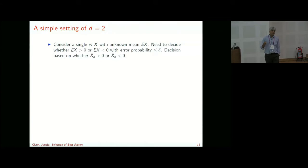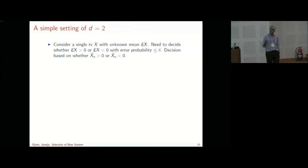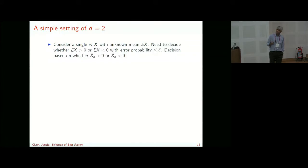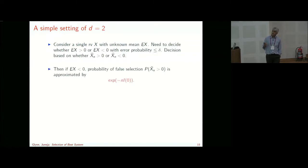Two-phase implementation: if I knew I(0), then log(1/delta)/I(0) samples would ensure probability of false selection is at most delta. A reasonable procedure is: in phase one, generate order log(1/delta) samples to estimate the rate function I(0) — call the estimator Î_m(0). In phase two, since it's log(1/delta) samples I can throw phase one away; generate log(1/delta)/Î_m(0) samples and decide the sign of E[X] based on whether X̄_n is greater than or less than zero.